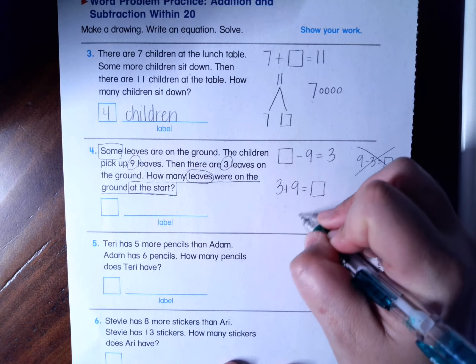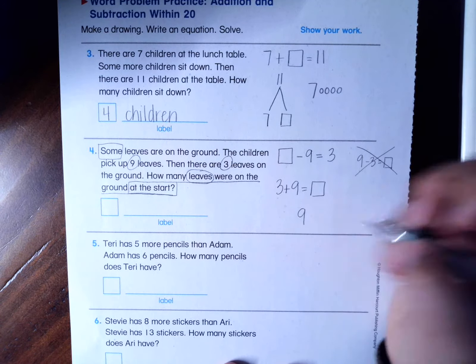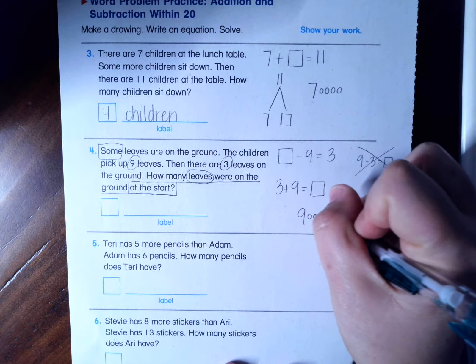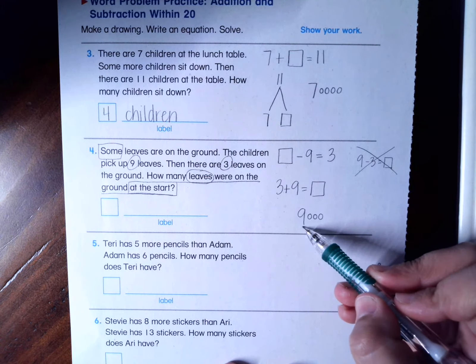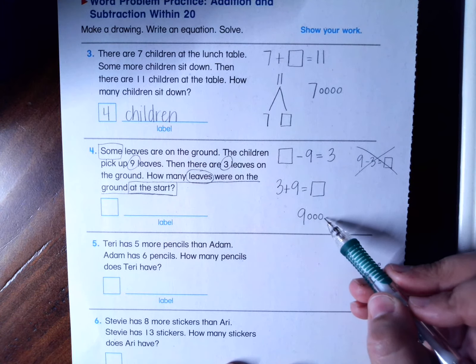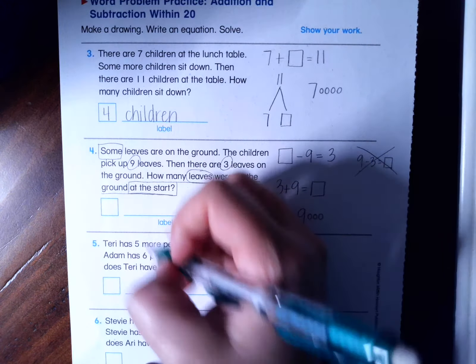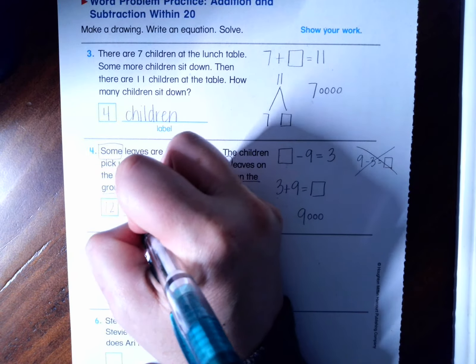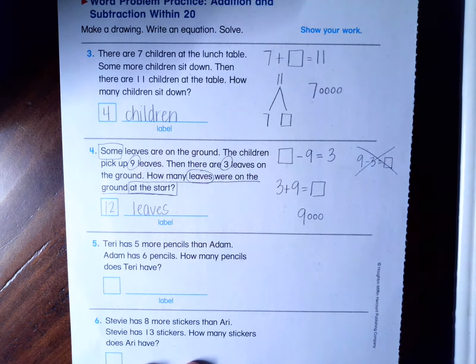Don't forget, you do have to draw a picture of some sort. You can draw a math mountain. I like to draw a picture to help me solve it. So I have nine, 10, 10, 11, 12. So there were 12 leaves at the start.